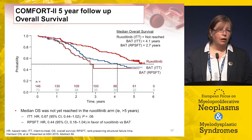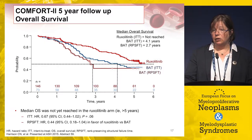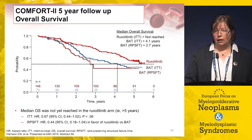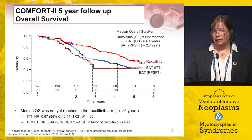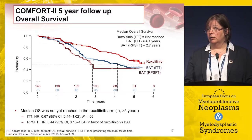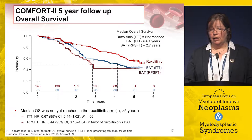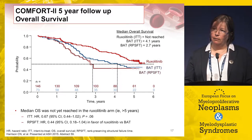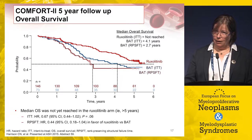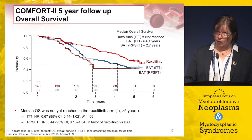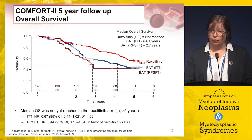Do I tell my patients they're likely to have a survival advantage with ruxolitinib? Yes, because I find the COMFORT-2 overall survival data very compelling — there is a clear separation of curves between standard therapies and ruxolitinib. If a patient has splenomegaly and symptoms with intermediate-2 or greater risk disease, I think this is compelling evidence to use ruxolitinib, and I do tell patients they're likely to have a survival advantage.